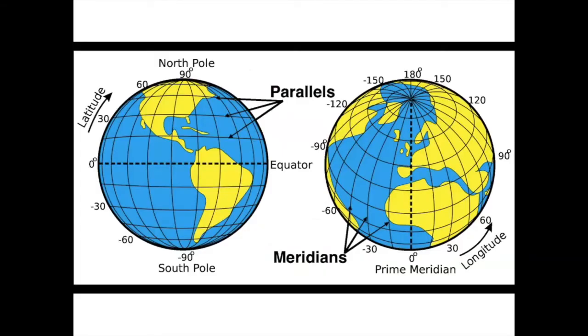You have parallels and meridians on the earth. Meridians are great circles. They all intersect at the poles and bisect the sphere. Parallels are not. Parallels are lines of constant latitude and they are small circles. Meridians are lines of constant longitude.